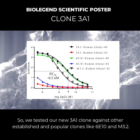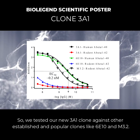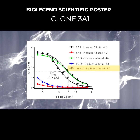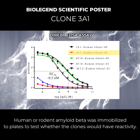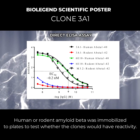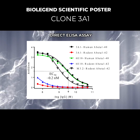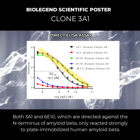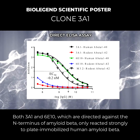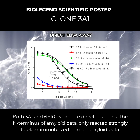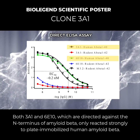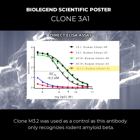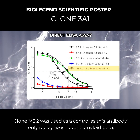So, we tested our new 3A1 clone against other established and popular clones like 6E10 and M3.2. Human or rodent amyloid beta was immobilized to plates to test whether the clones would have reactivity. Both 3A1 and 6E10, which are directed against the N-terminus of amyloid beta, only reacted strongly to plate-immobilized human amyloid beta. Clone M3.2 was used as a control, as this antibody only recognizes rodent amyloid beta.